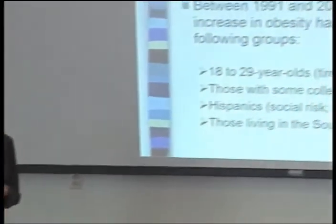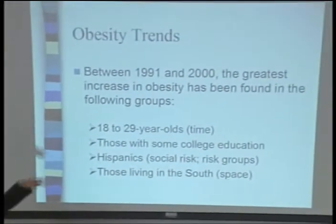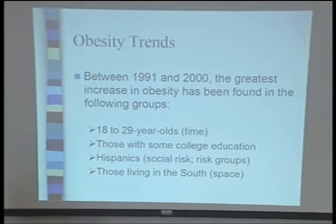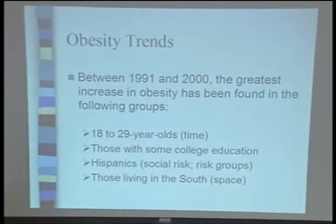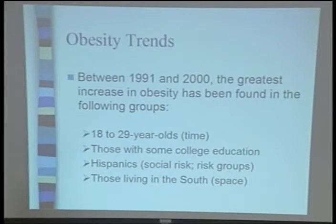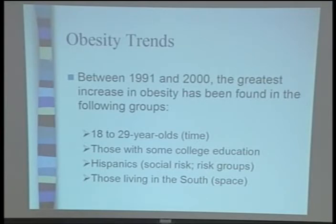Obesity rates have skyrocketed over the past 20 years and show very clear distribution patterns by both space and time. We can think about life course epidemiology: 18 to 29 year olds have experienced the highest rates of obesity in the nation. Those with some college education, as an indicator of socioeconomic status, experience the highest rates. Hispanics, as an ethnic group, also show differences in how health is distributed.